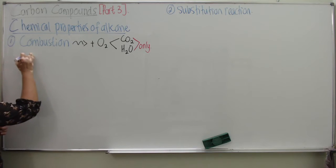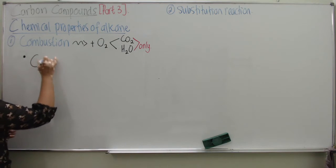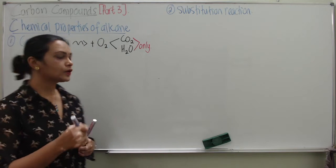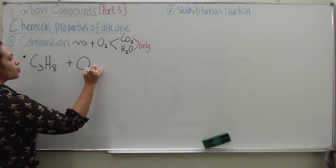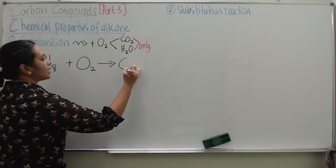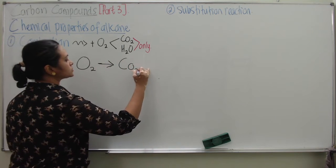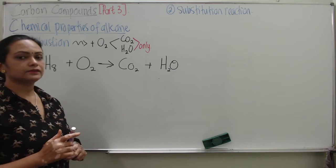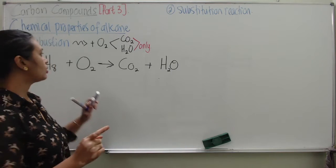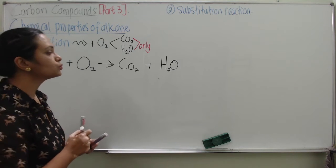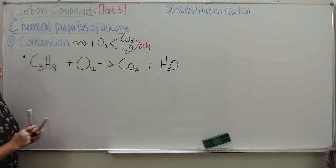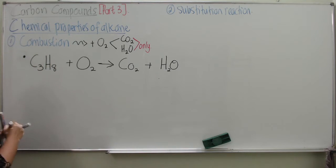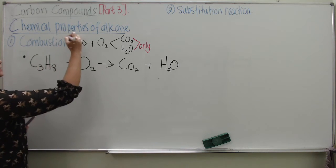Let's go to one example where we assume propane. If you don't know propane, please watch teacher's Part 2 video. Propane goes through combustion with oxygen to produce carbon dioxide and water. I have written the products as carbon dioxide and water because I assume this is a complete combustion. The first chemical property of alkane is going through combustion. Now, how would you balance this equation?